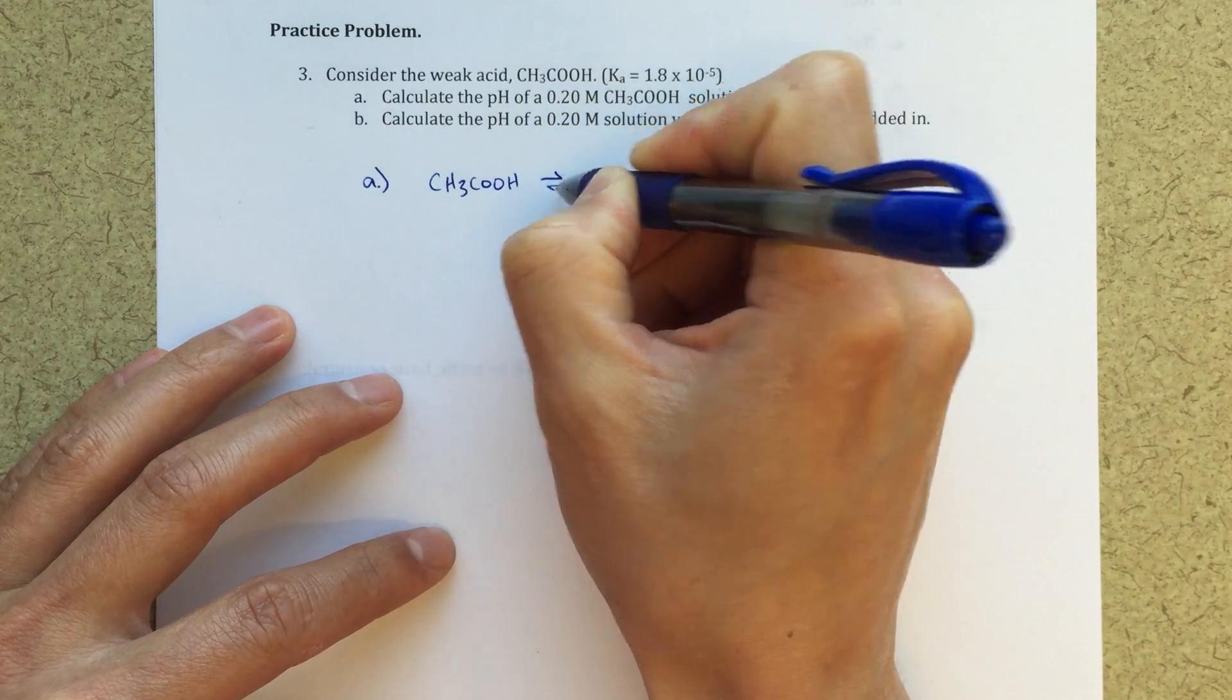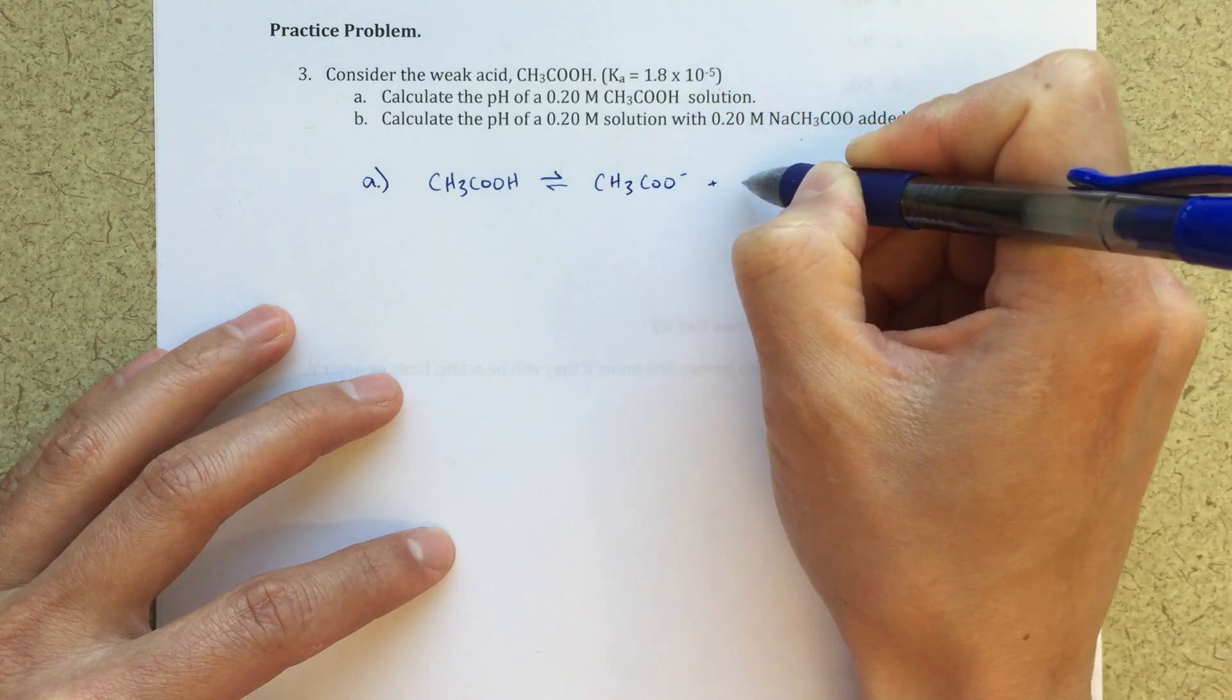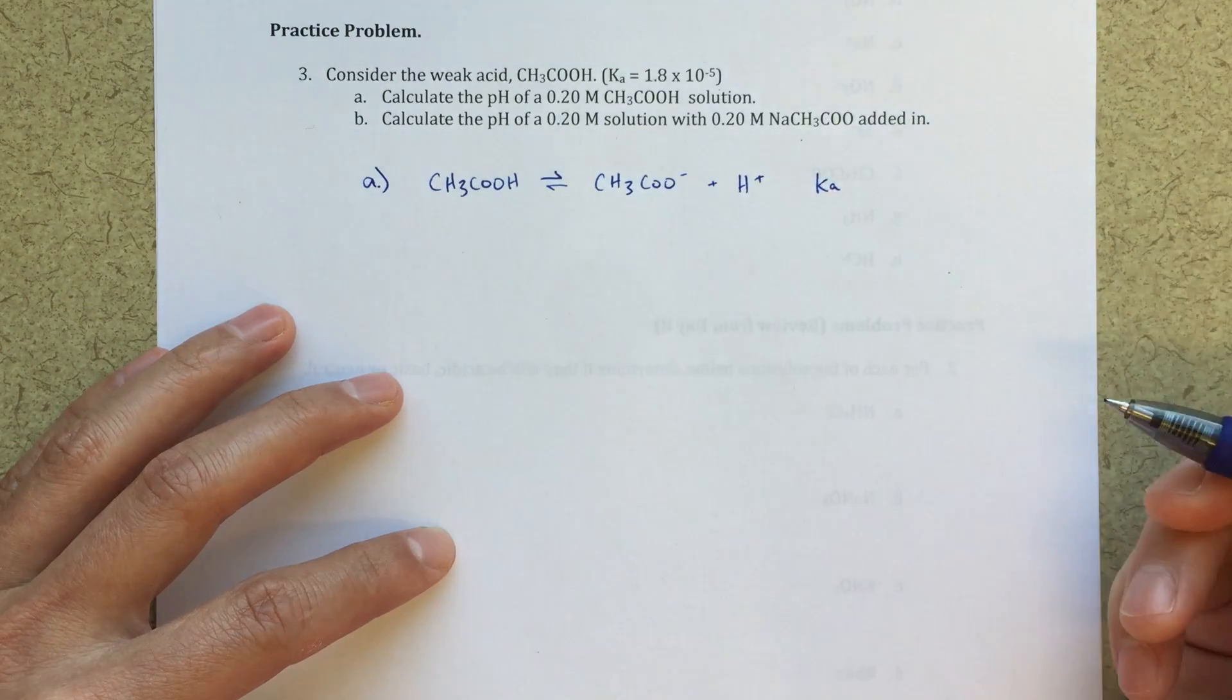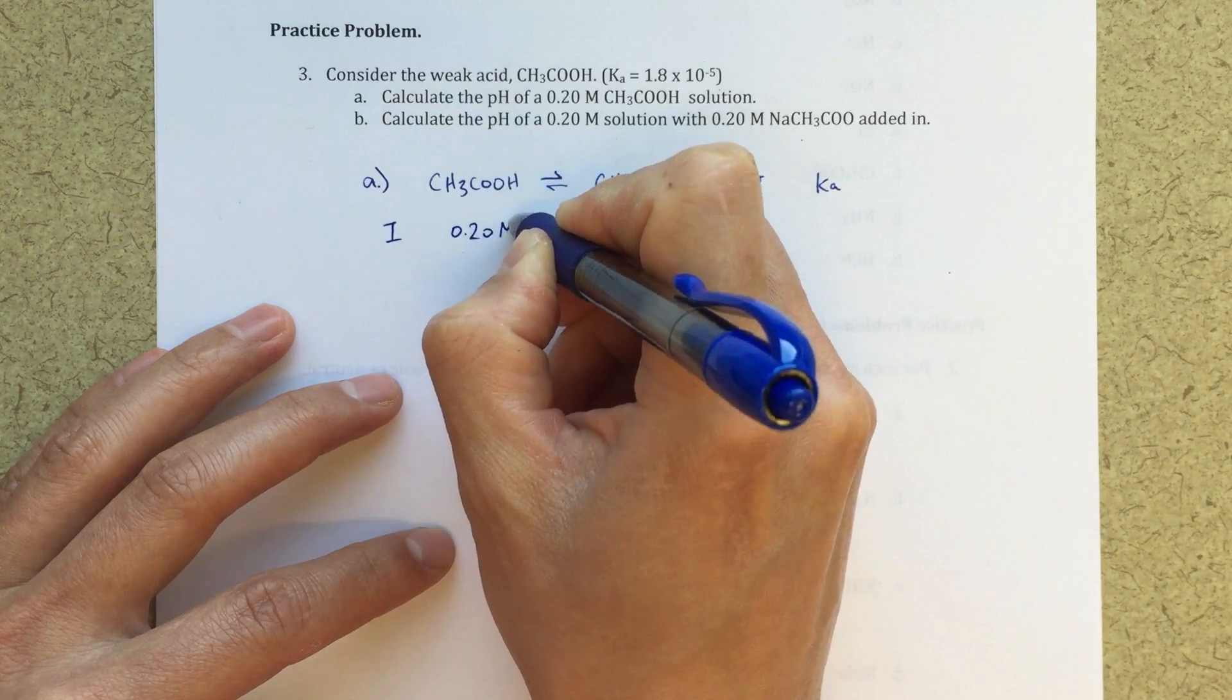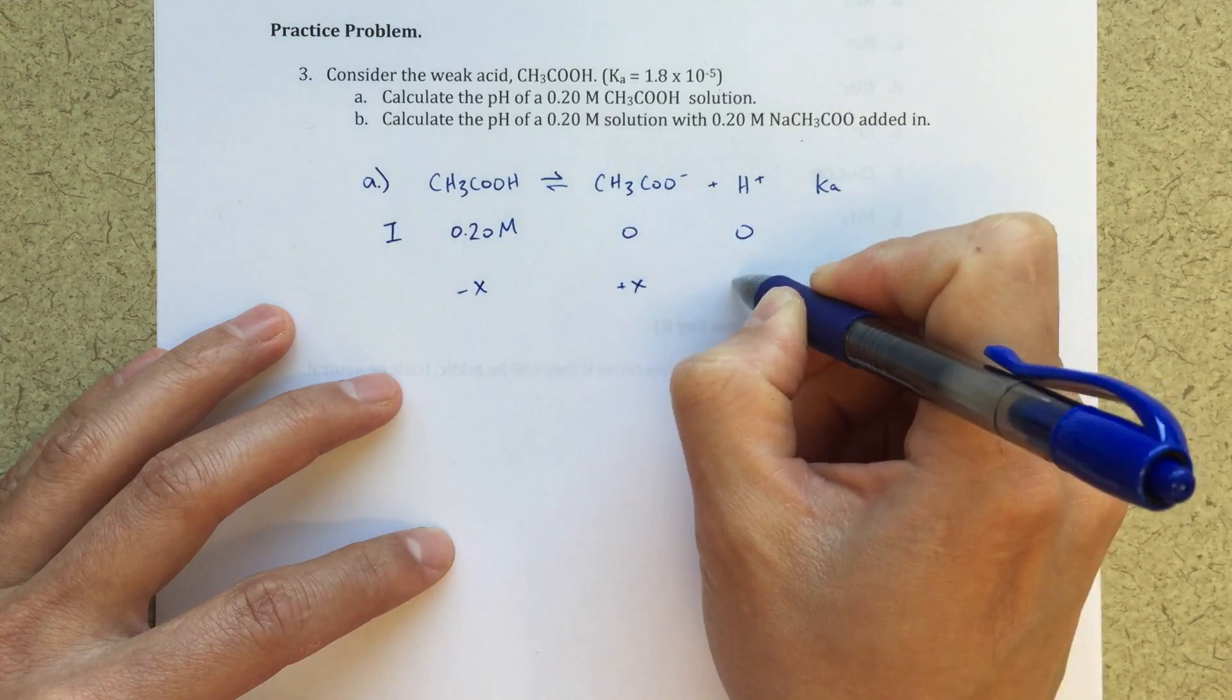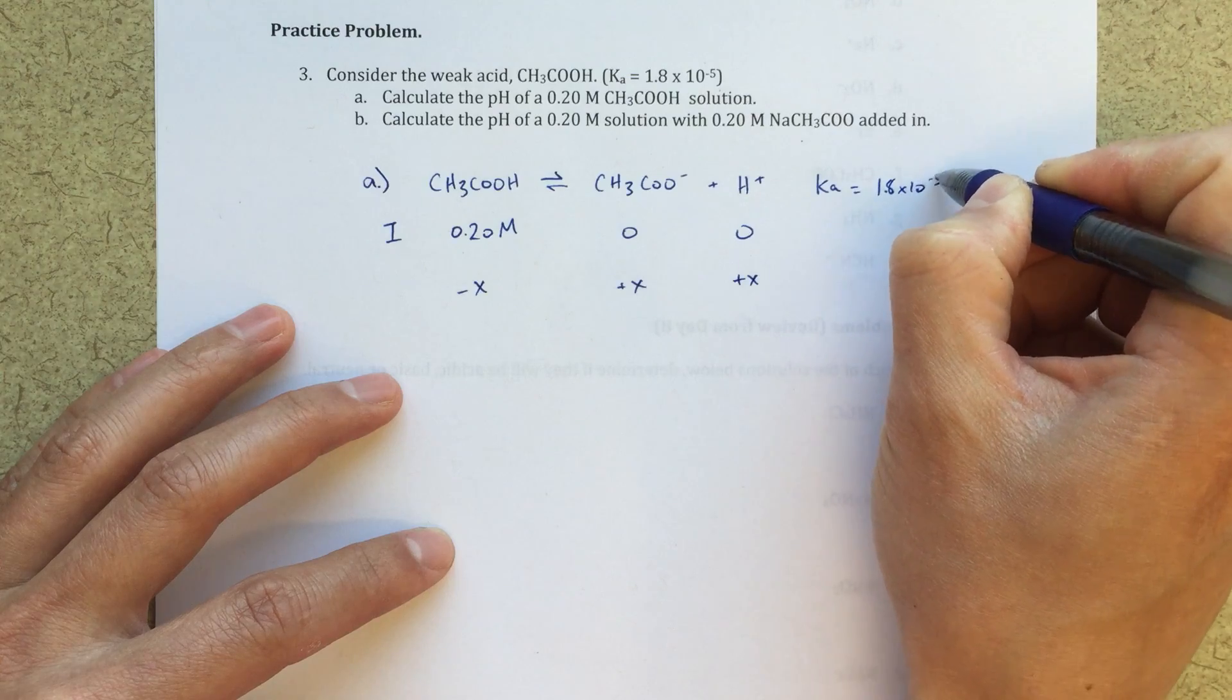The first thing that I would do is write out my actual equilibrium reaction that's going to be occurring. This is going to be my Ka. My initial here is going to be 0.20 molar, 0 and 0, minus x, plus x, plus x. Ka is equal to 1.8 times 10 to the minus 5th.